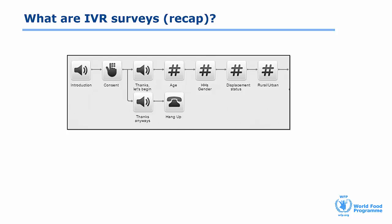In this example, respondents will first hear the introduction call step, and then the consent call step, which asks the respondent whether they'd like to participate in the survey. If the respondent agrees to participate by pressing 1 on their keypad, they'll be led to the 'Thanks, let's begin' call step, after which they go on to survey questions such as age, gender of the head of household, and so on.